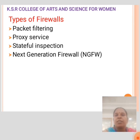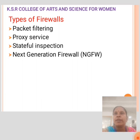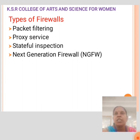Types of Firewall: Packet Filter, Proxy Service, Stateful Inspection, and Next Generation Firewall. Packet Filtering: a small amount of data is analyzed and distributed according to the filter standard. Proxy Service: a network security system that protects by filtering messages at the application layer. Stateful Inspection, also called Dynamic Packet Filtering, monitors active connections to determine which network packets to allow through the firewall.